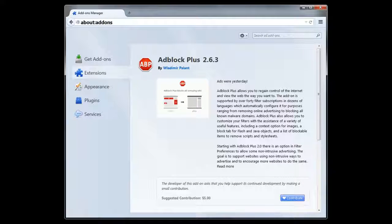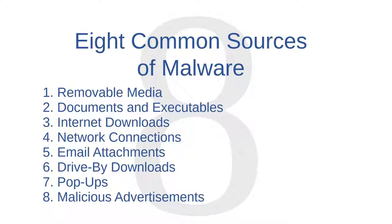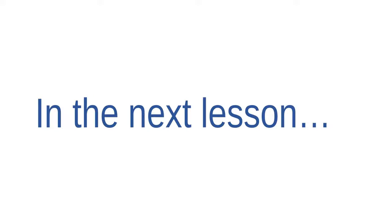Let's review. In this video, I've shared eight potential sources of malware: removable media, documents and executables, internet downloads, network connections, email attachments, drive-by downloads, pop-ups, and malicious advertisements. My hope is that the better you understand where malware comes from, the better prepared you will be to avoid malware altogether. In the next lesson, we'll go into a little more depth on the topic of defending yourself against malware infections.